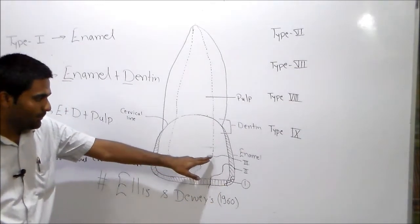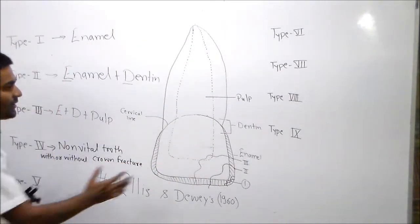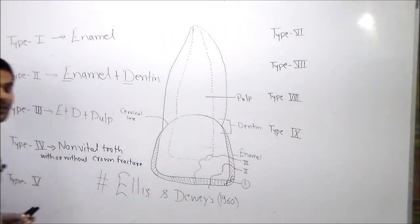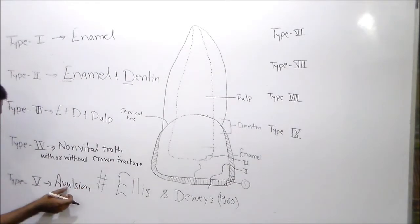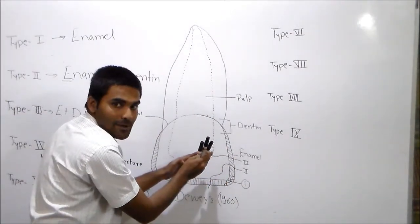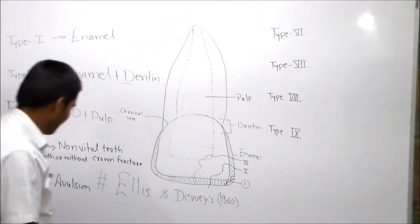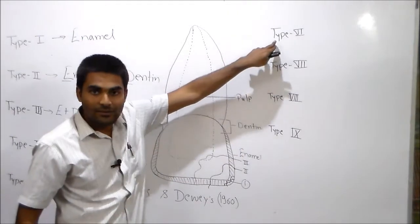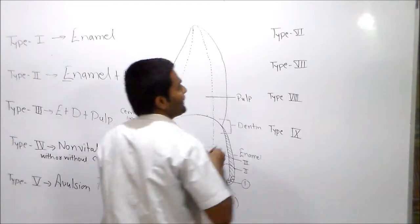Then dentin, then pulp, then the whole tooth is non-vital. Now what do we need to do? Now the whole tooth is lost. What do we need to do? Avulsion.